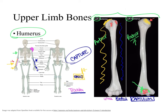The trochlea and the capitulum are smooth rounded surfaces used in articulation — they are the condyles of the humerus with special names. On each side of these condyles we have bumps called epicondyles — they are above the condyles. We have the lateral epicondyle and the medial epicondyle of the humerus. The medial epicondyle is much bigger than the lateral epicondyle, and you can feel that in your upper limb.